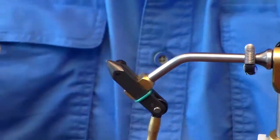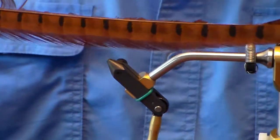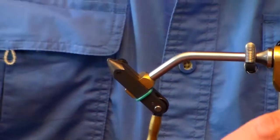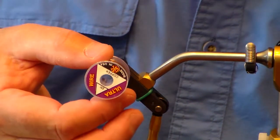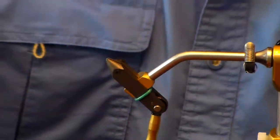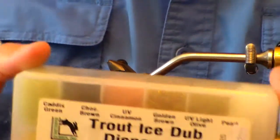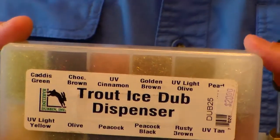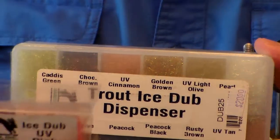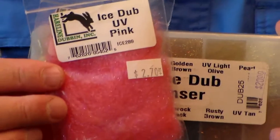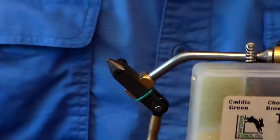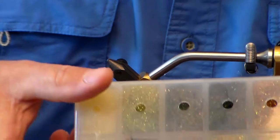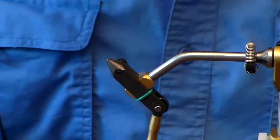We'll use a little bit of natural pheasant tail, some small copper wire, and some trout ice dub. You can get this in a dispenser or buy the individual packs. Today we're going to use the olive trout ice dub.